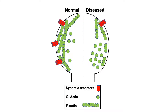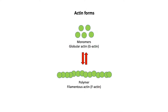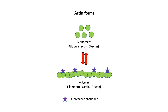Recent advances have led to a wealth of knowledge of actin in neuronal physiology and pathophysiology. However, much is still unknown and needs to be focused on. In this regard, fluorescent analogues of phalloidin have proven to be a major tool in actin research.